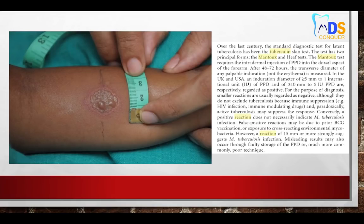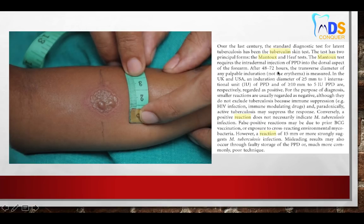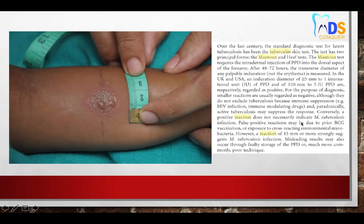The standard diagnostic test for latent tuberculosis is the tuberculin skin test, of two types: the Mantoux test and the Heaf test. In the Mantoux test, PPD (purified protein derivative) is injected into the dorsal aspect of the forearm. Induration is observed and palpated after 48 to 72 hours. If the indurated area is greater than 5 mm for 1 international unit of PPD it is considered positive; for 5 units it should be greater than 10 mm.